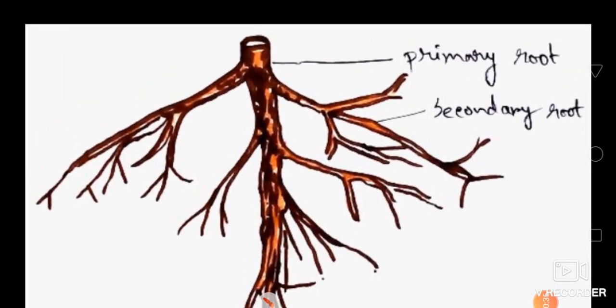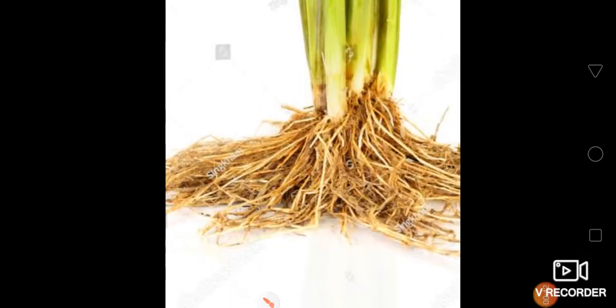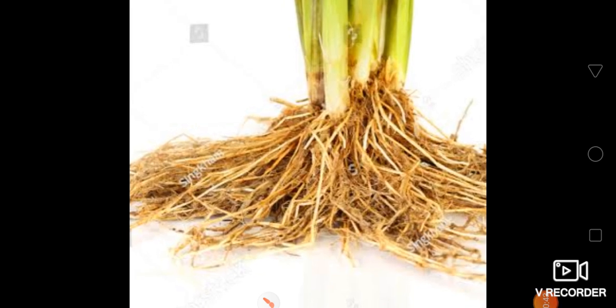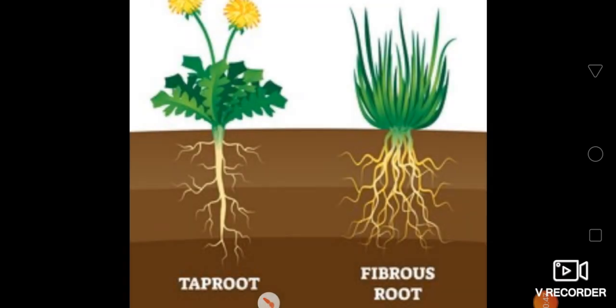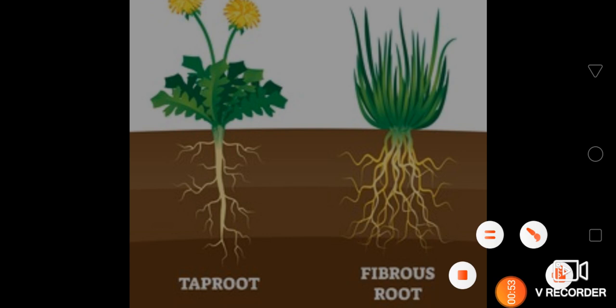Here is an easy and simple diagram of the Tap Root System. The main components are the Primary Root and Secondary Root. Rice has a Fibrous Root System. You can see the difference between the Tap Root and Fibrous Root structures. Thank you.